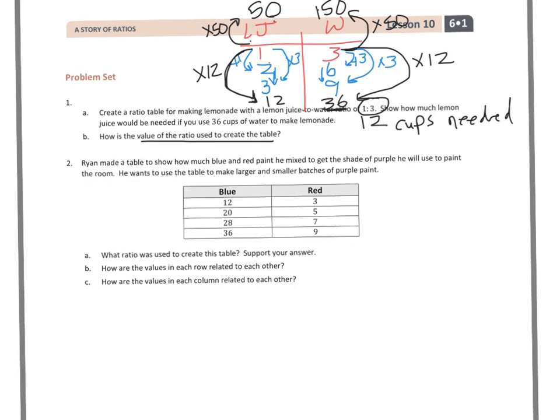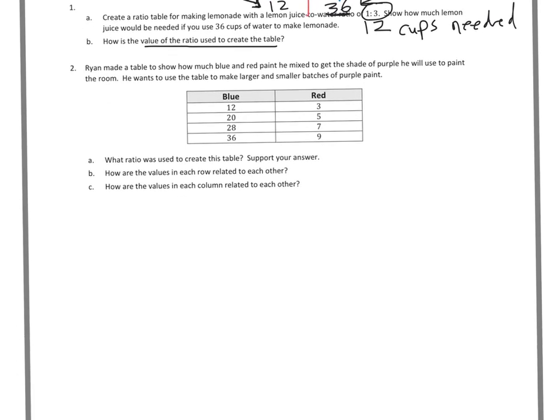Now let's take a look at 2. Ryan made a table to show how much blue and red paint he mixed to get the shade of purple he will use to paint. He wants to use the table to make larger and smaller batches of purple paint.